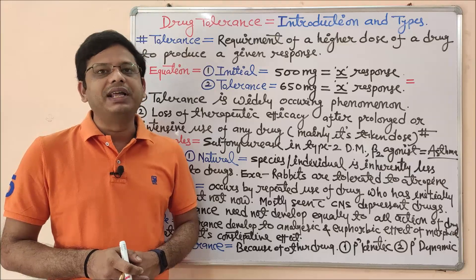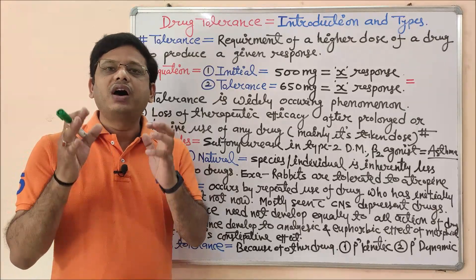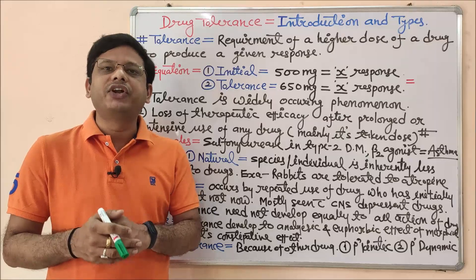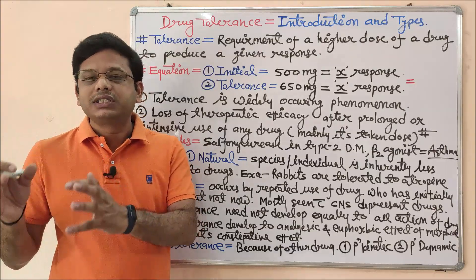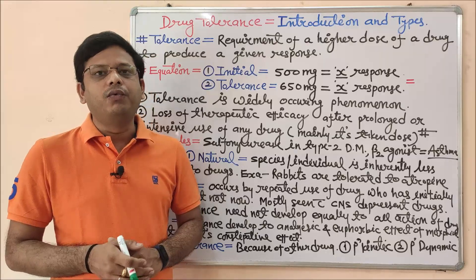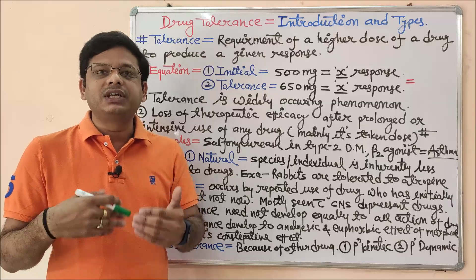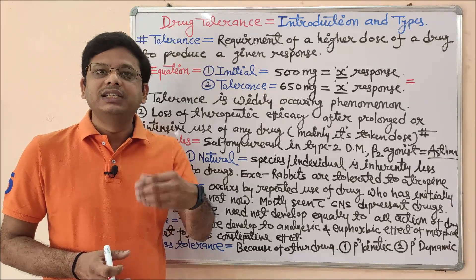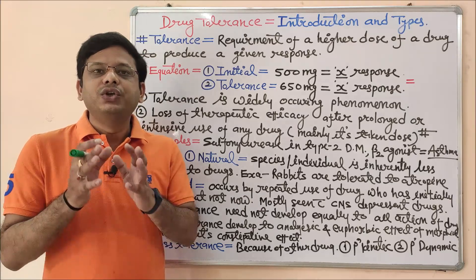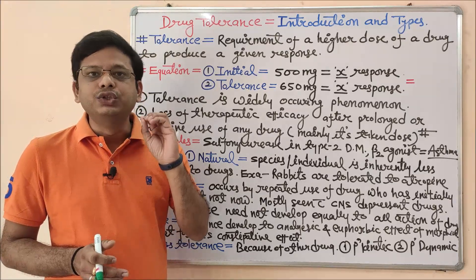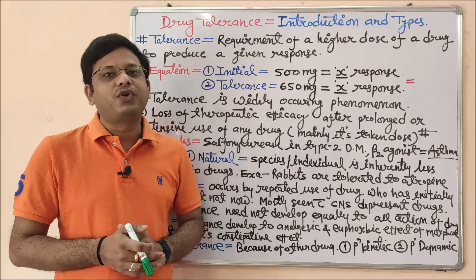The most suitable example to understand drug tolerance is the relationship between a student and a teacher. Suppose you are coming to college for the very first time after admission — you would be very sincere, obedient, and dedicated. You would always complete assignments. But after one month, one semester, or one year, you become tolerated to my instructions and start making excuses for not doing homework. That is the process of toleration.